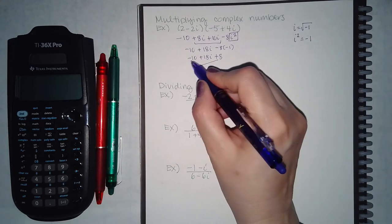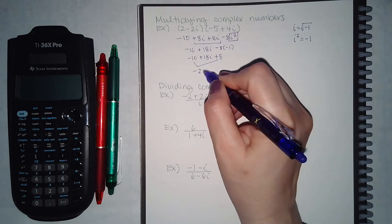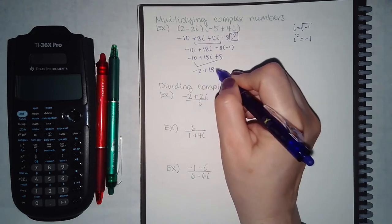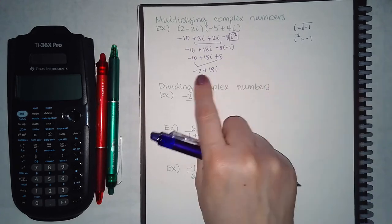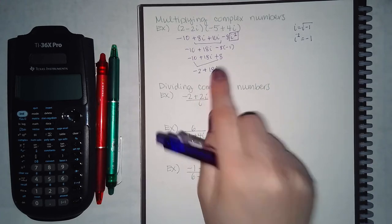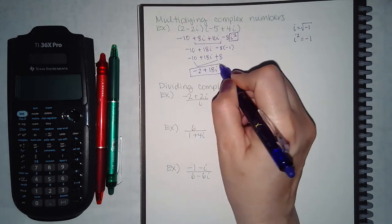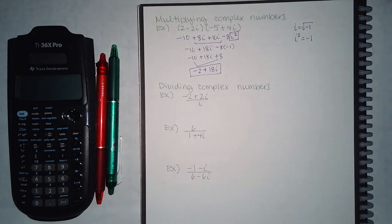Now I can combine my real number parts: negative 10 and positive 8 combine to make negative 2. As long as you have your real part in the front and your imaginary part in the back, this is the final answer. You cannot combine them — they are not like terms at all; they're not even the same kind of number.